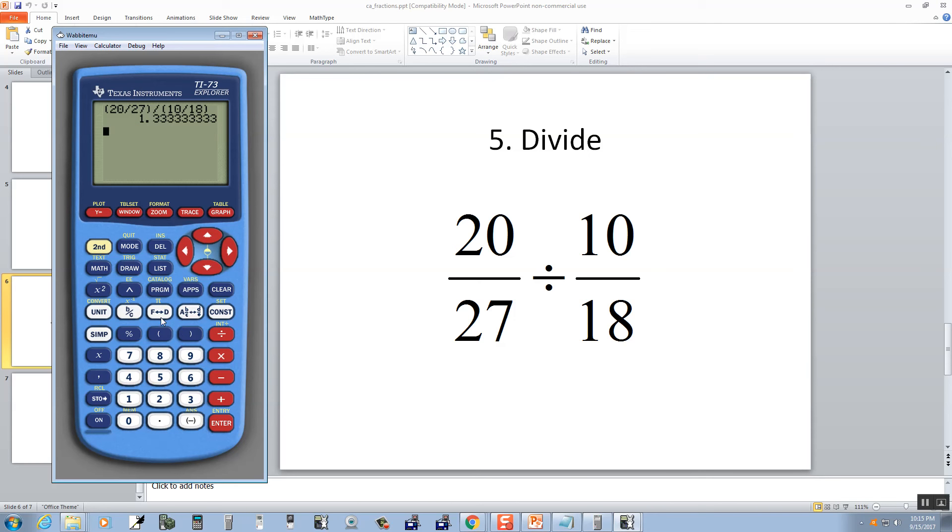And now I've got a decimal, so I'll push my F, D, and then push enter. Now notice what we get here. We get 1 and 1 third.